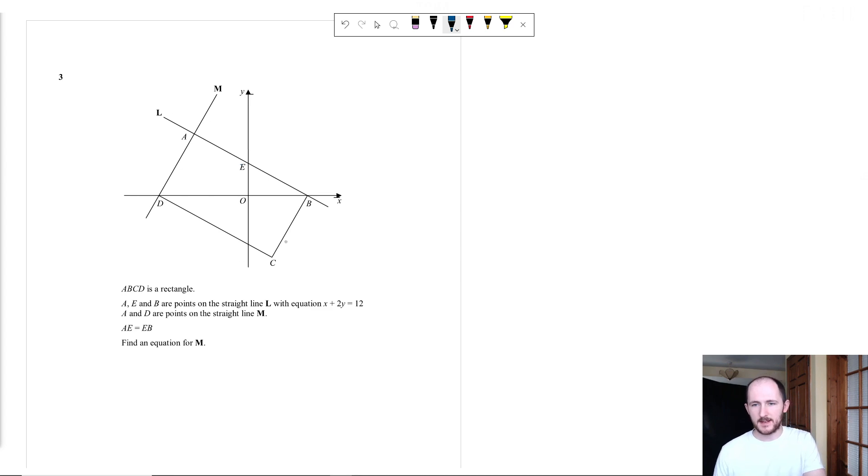And it looks something like this. So we have a straight line here. First of all, ABCD is a big old rectangle. AEB are on one line, where the equation is, let's write it out one more time, X plus 2Y equals 12. And we also know that this line here is a straight line, so A and D are on a straight line M. And we need to find an equation for M.